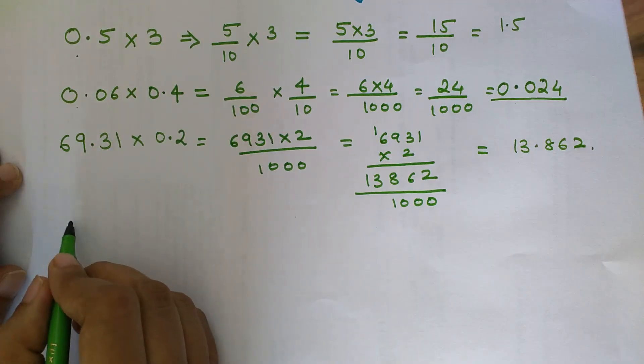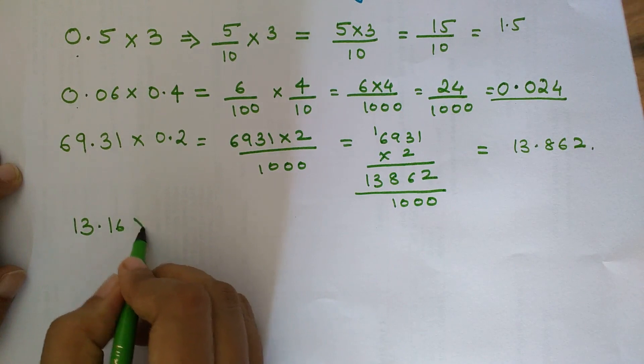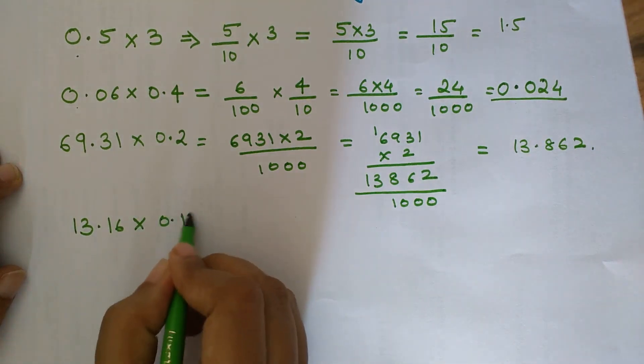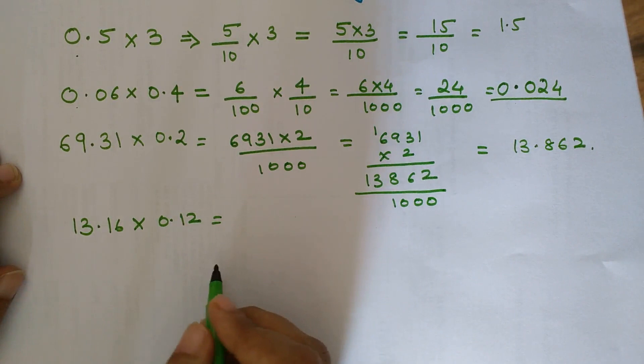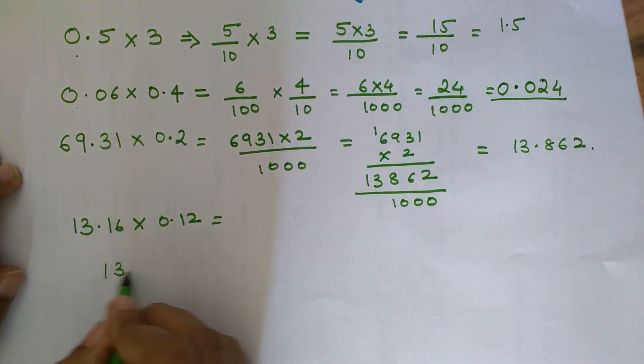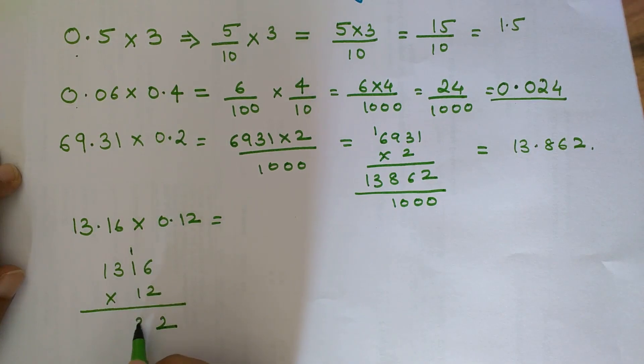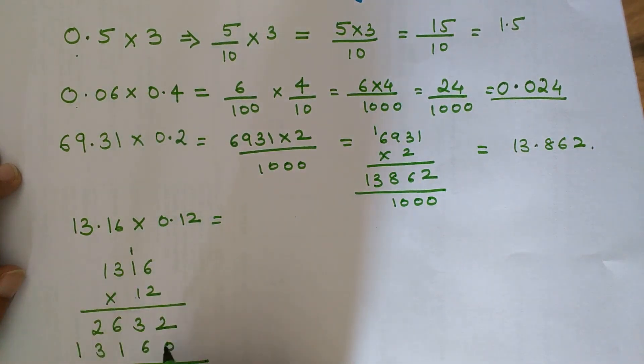Similarly, let's see how to do multiplication of 13.16 into 0.12. This looks complicated, so we'll simply multiply 1316 into 12. 2 into 6 is 12, write 2 and carry 1. 2 into 1 is 2 plus 1 is 3. 2 into 3 is 6, and 2 into 1 is 2. Then 1 into 6 is 6, 1 into 1 is 1, 1 into 3 is 3, and 1 into 1 is 1.